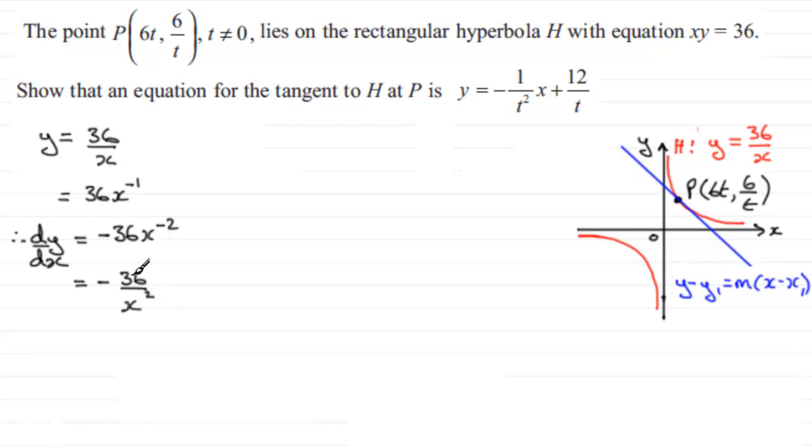Now we want to find the gradient at point P where x is 6t. So when x equals 6t, dy/dx equals minus 36 over 6t all squared. That's going to be 36t squared when we square it.